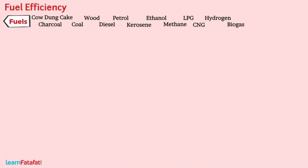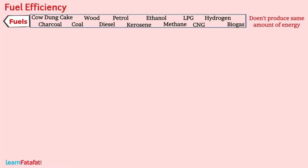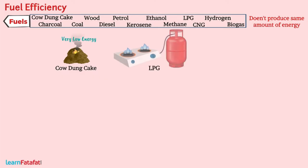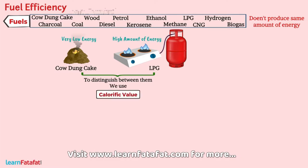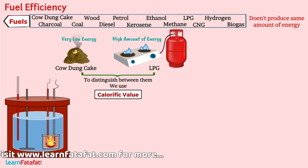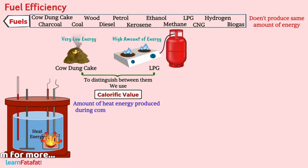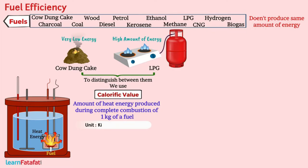Fuel Efficiency. Not all fuels produce the same amount of energy. Some fuels like cow dung cake liberate very low energy, while some like LPG liberate very high amount of energy. To distinguish between them, we use the term calorific value. The amount of heat energy produced during complete combustion of 1 kg of fuel is called its calorific value. It is expressed in a unit called kJ per kg.